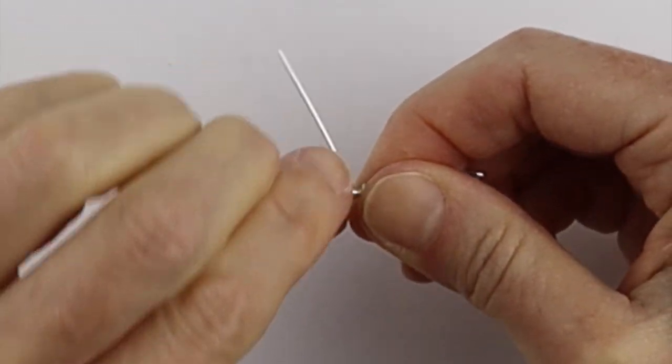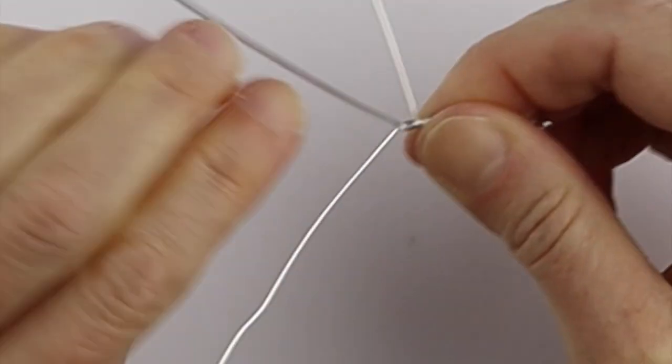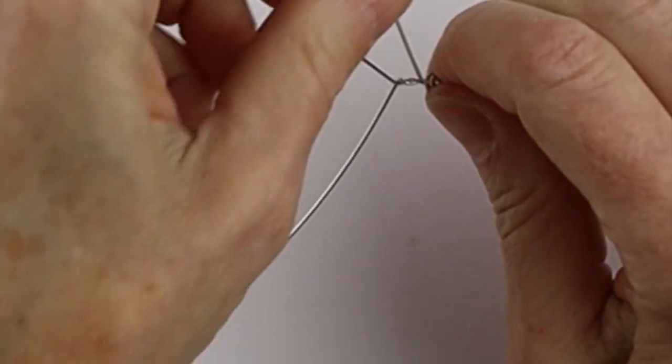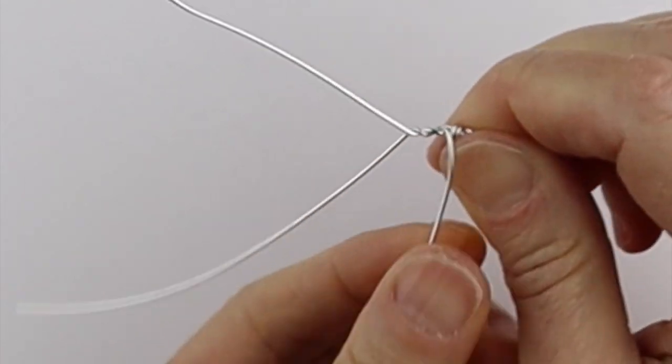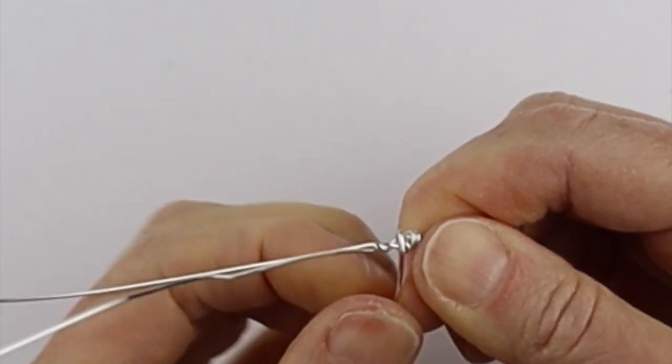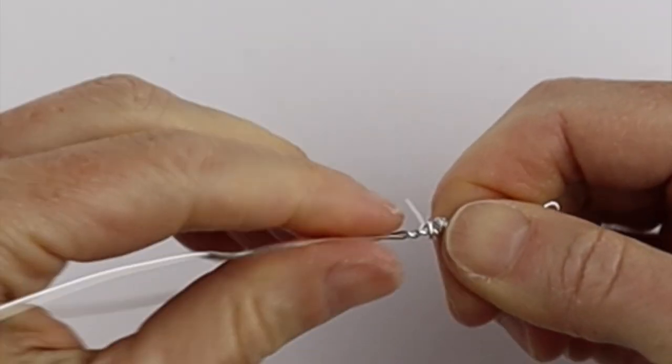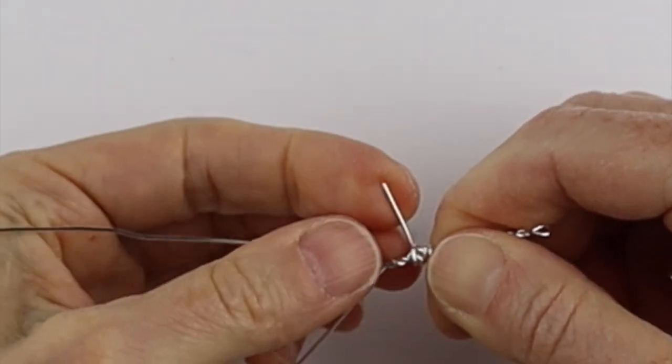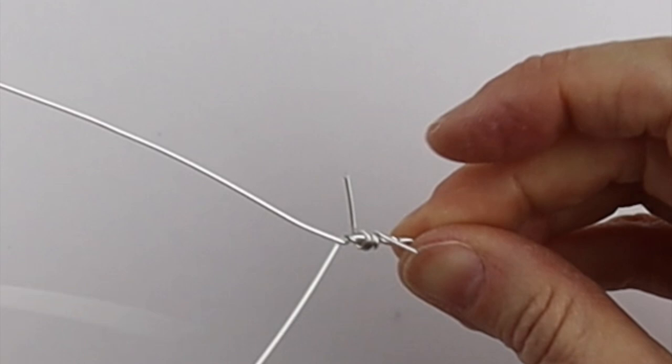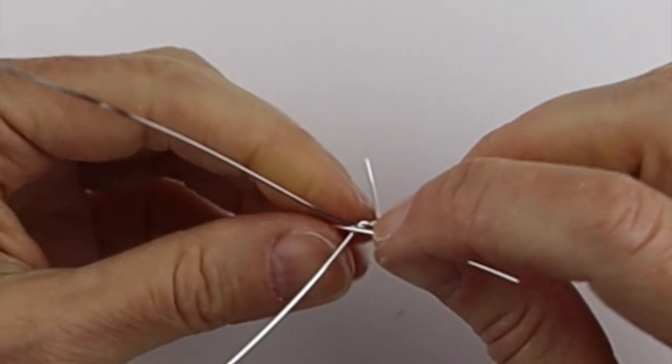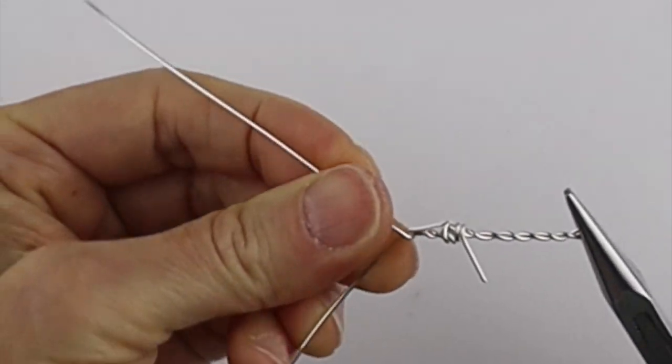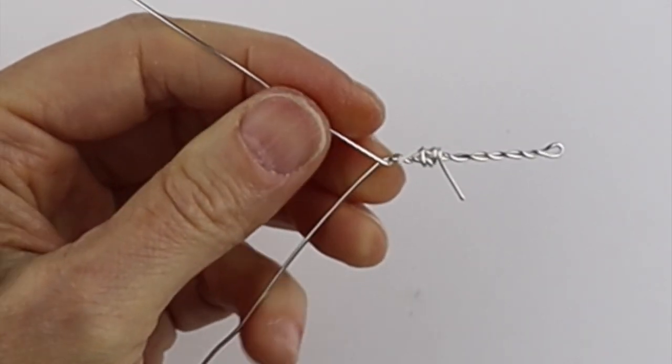Bend that around once and then another time to make sure it's secure. Now we're going to twist these. Just twist them a couple of times, one, two, because we want the barbs to be pretty close together. Then we'll take this one and wind it around a couple of times, just one and two, to get it really solid.